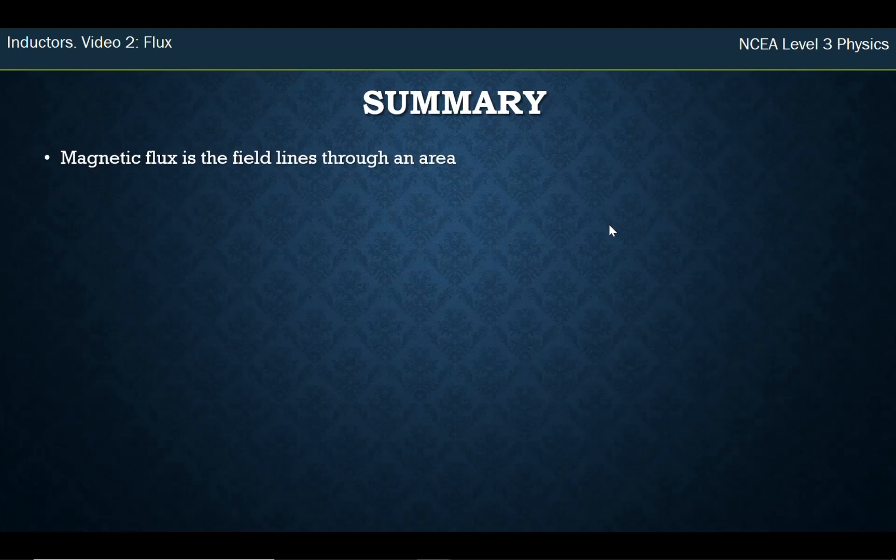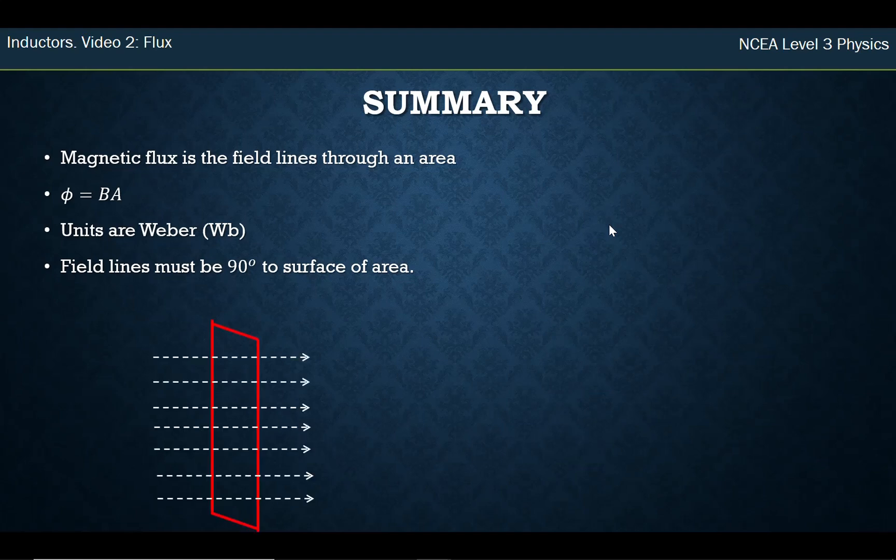So in summary, magnetic flux is effectively the amount of field lines that are going through an area. So you calculate it from field times the area. The units are Webber and field lines must be 90 degrees to the surface, and in the next video, we're going to go into a deep dive on why changing flux is important, and how that helps us to calculate how much electricity has been generated. So 90 degrees to the surface, so when it's this way, we get lots of flux, this way we get not much flux, or zero flux completely.